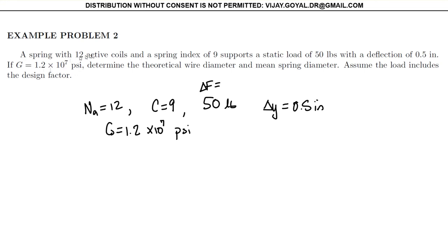It's just saying find your theoretical wire diameter, so it's asking to find d, and it's asking to find your mean spring diameter. And it says to assume the load includes the design factor, so therefore we don't need to multiply this by any factor.